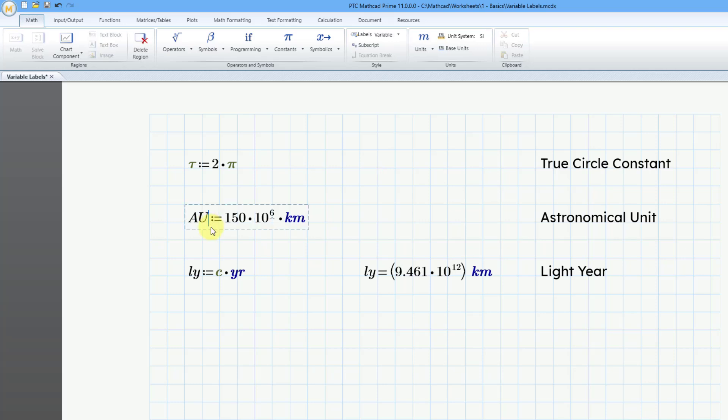So let me click in AU. And I'm going to go to the Label drop-down once again. And instead of choosing constant like I did before, I'm going to choose unit. Let me do the same thing for lightyear. Let's go to the Labels drop-down and choose unit.